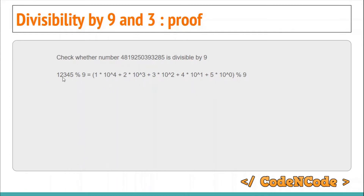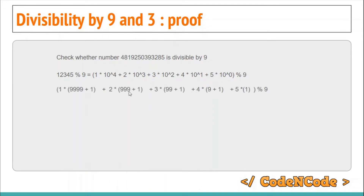If you apply all this and then add, you get the number written in base-10 format. Now the interesting thing is: 10^4 can be written as 9999 + 1, 10^3 as 999 + 1, 10^2 as 99 + 1, and 10^1 as 9 + 1. In general, 10^d can be written as d×9 + 1. So 10^4 = 4×9 + 1, 10^3 = 3×9 + 1, and so on.